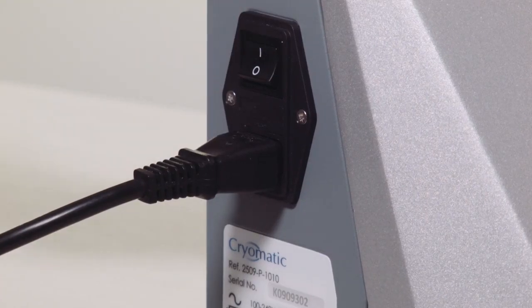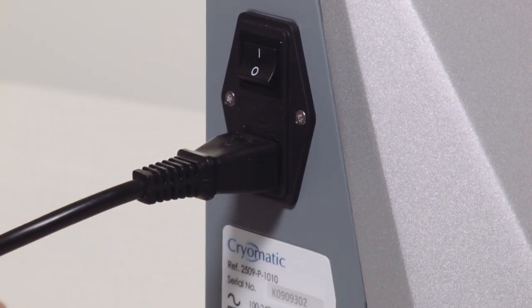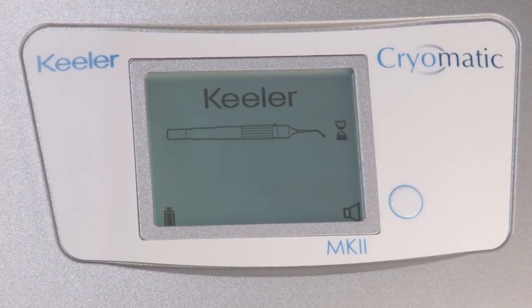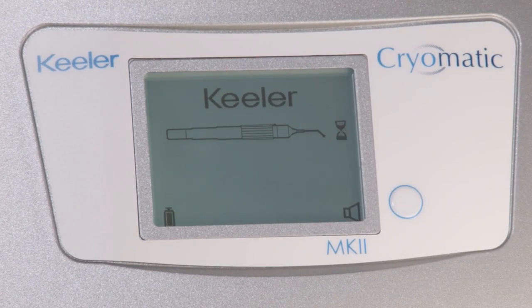After the initial setup, switch the cryo on using the mains inlet rocker switch. Initialization checks will automatically start and the cryo probe can be connected when they are completed.